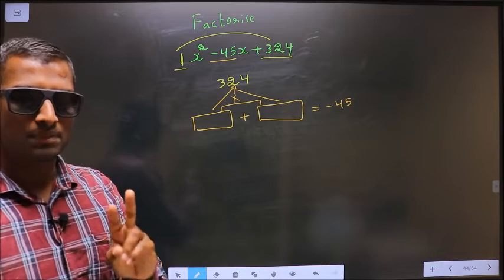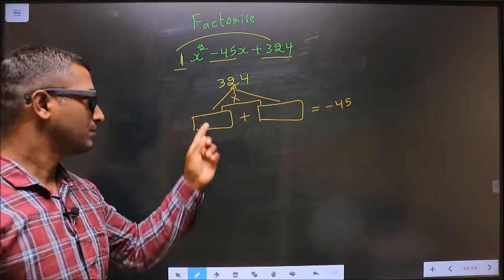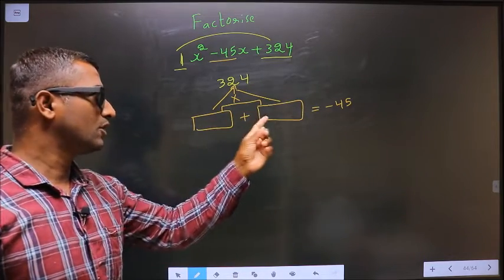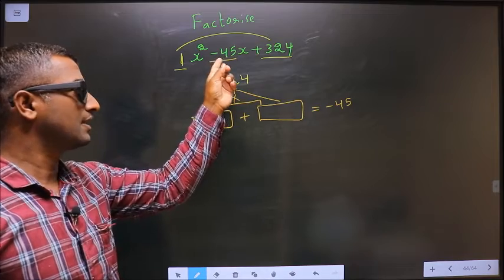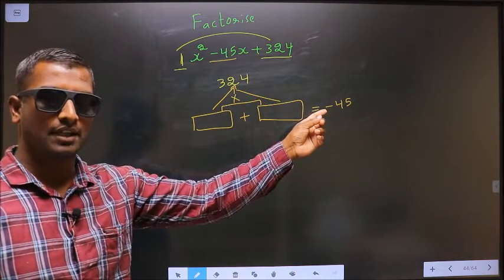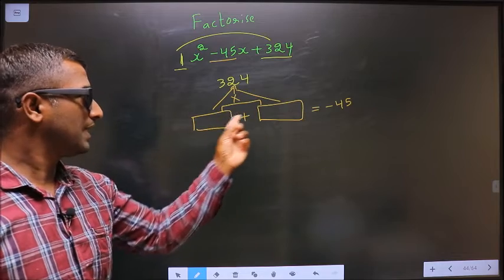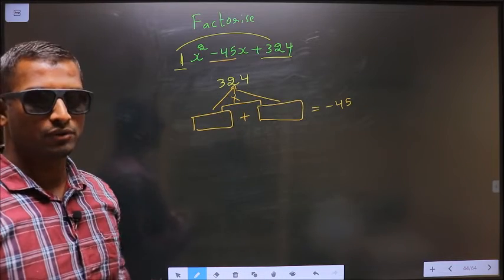Now look out for 2 numbers such that when you add these 2, you should get the x coefficient, that is minus 45. And also when you multiply these 2 numbers, you should get 324.